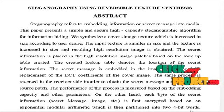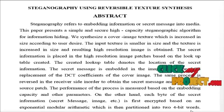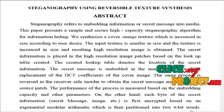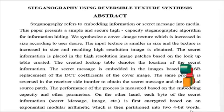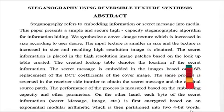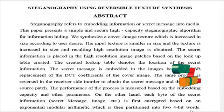The same process is reversed on the receiver side in order to obtain the source patches and the secret information. Before embedding the secret message, we secure it using the DCT of the input image so that we cannot identify in which location the secret information is hidden.